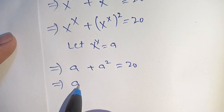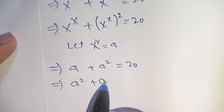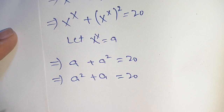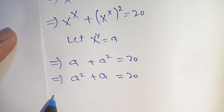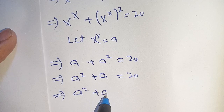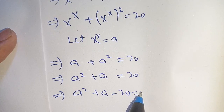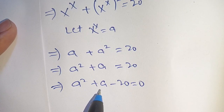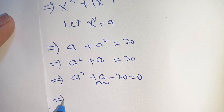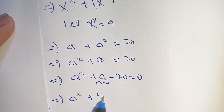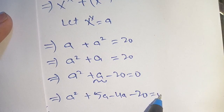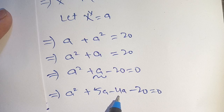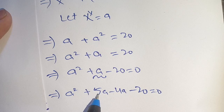We can write this as a squared plus a is equal to 20. This is a quadratic equation. We can solve it as a squared plus a minus 20 is equal to 0, and we break down the middle terms as a squared plus 5a minus 4a minus 20 is equal to 0. As 5a minus 4a becomes a, and 5 times 4 becomes 20.